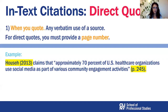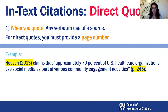The first situation where you need to cite is direct quotes. Direct quotes are any word-for-word use of a source. For direct quotes, APA says you need to provide the author's last name, the year of publication, and the page number. Here's an example you can see on the screen of how the citation would look like. The author's name here, Hause, is included in the sentence as the subject of the verb 'claims.'